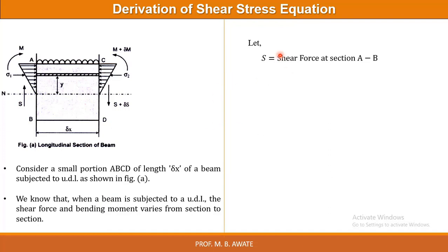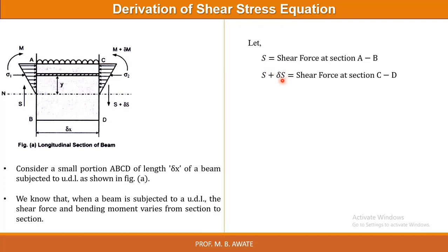Let S be the shear force at section AB, acting in the upward direction. And S plus delta S is the shear force at section CD, acting in the downward direction. S plus delta S means a slight addition in the shear force S. So S plus delta S is the shear force acting on face CD in the downward direction.